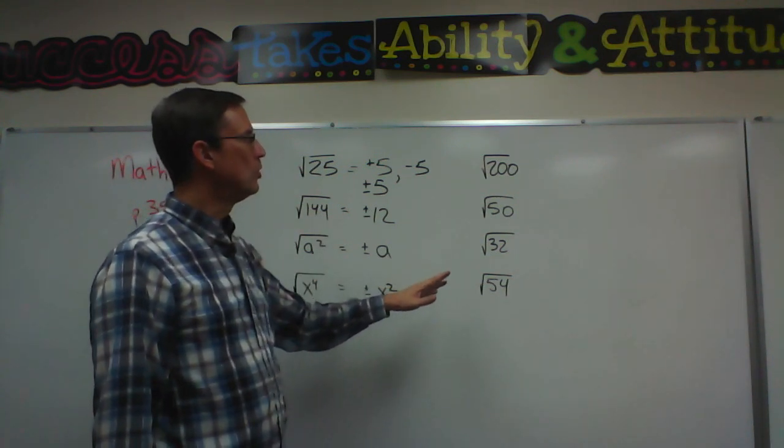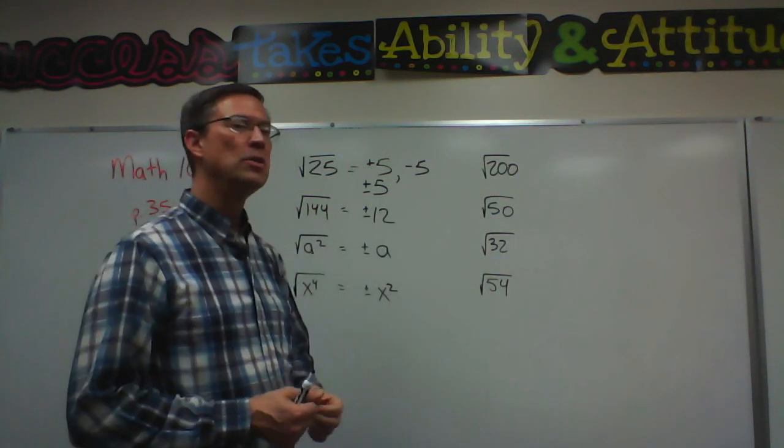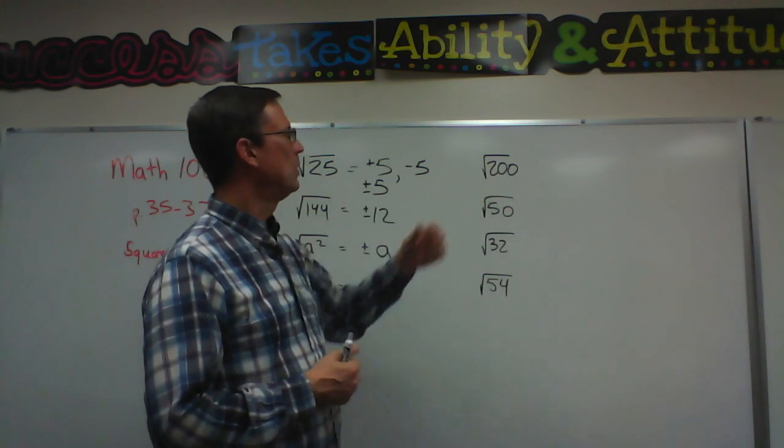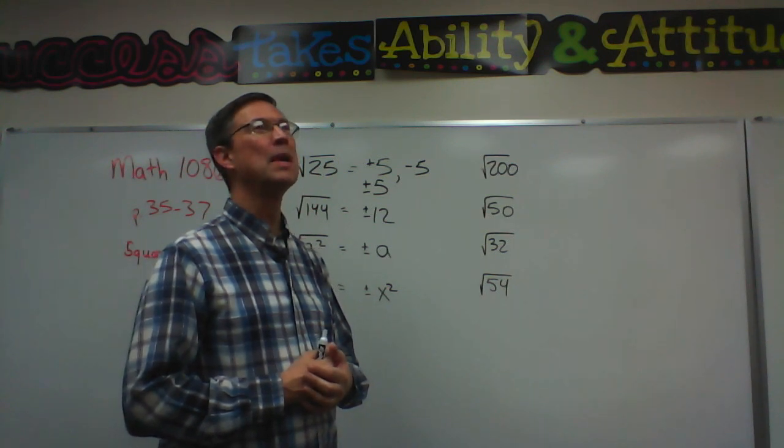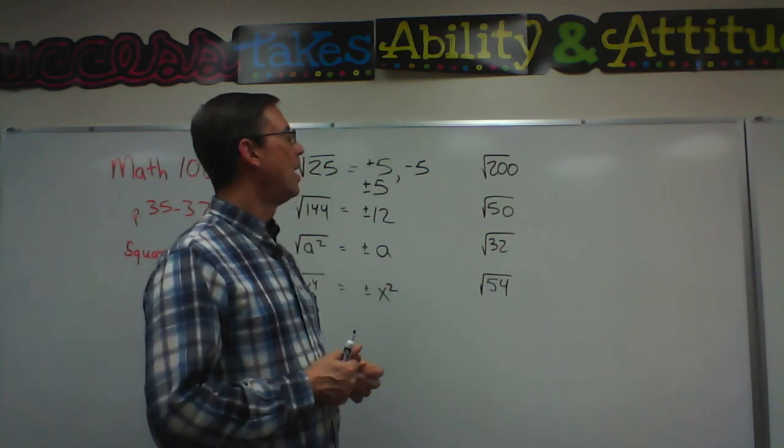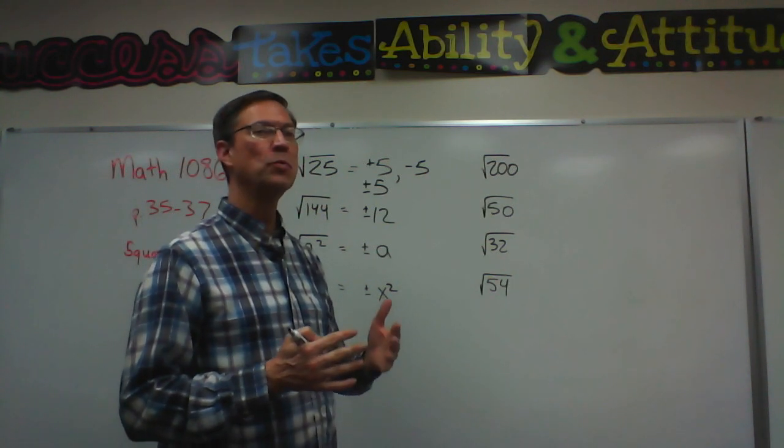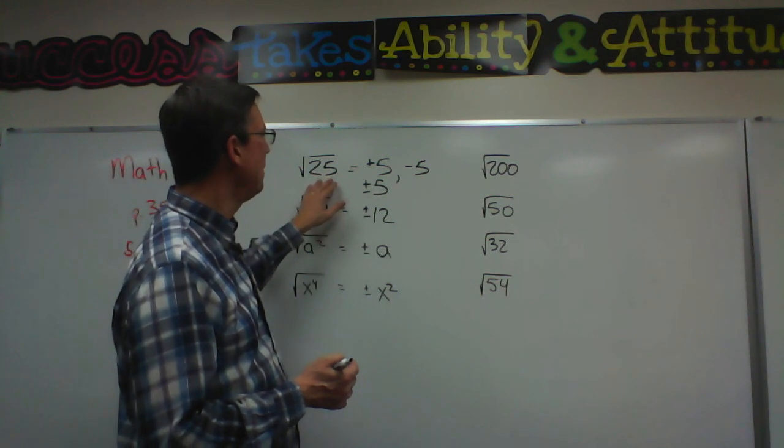I want to move into the next concept which is taking numbers that you can't just real easily find the square root. What's the square root of 200? It's not 100. Don't think about it being half. The square root of 50 is not 25. It's not half, it's what number times itself. Kind of like we did 5 times 5 is 25.